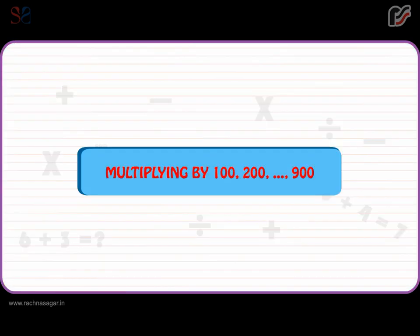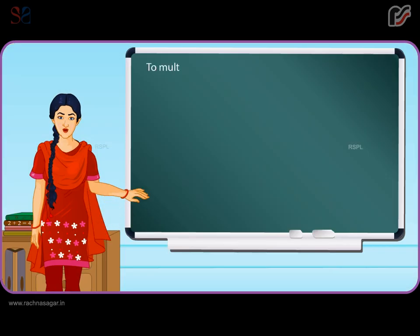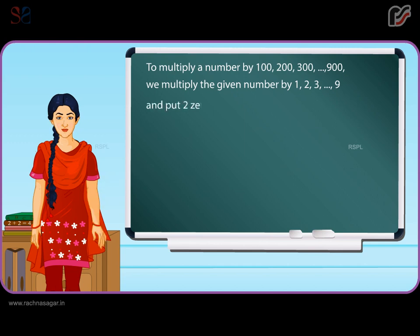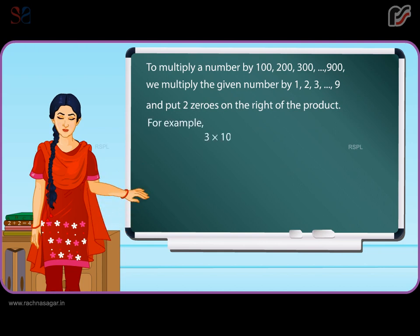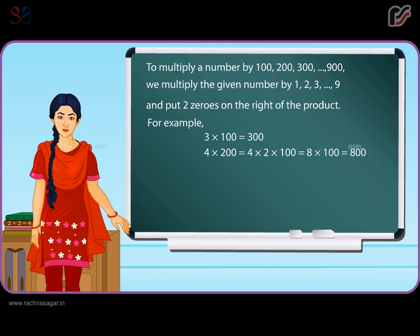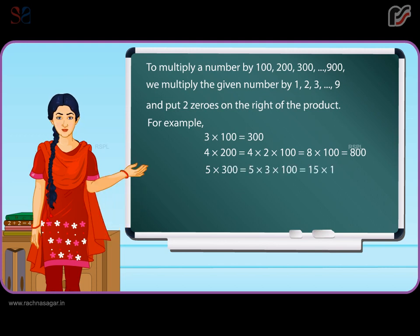Multiplying by 100, 200 ... 900. To multiply a number by 100, 200, 300 ... 900, we multiply the given number by 1, 2, 3 ... 9 and put two zeros to the right of the product. For example, 3 × 100 is equal to 300. 4 × 200 is equal to 4 × 2 × 100 is equal to 8 × 100 is equal to 800. 5 × 300 is equal to 5 × 3 × 100 is equal to 15 × 100 is equal to 1500.